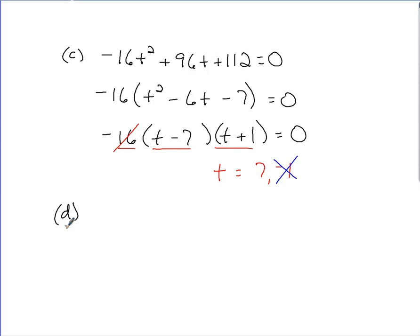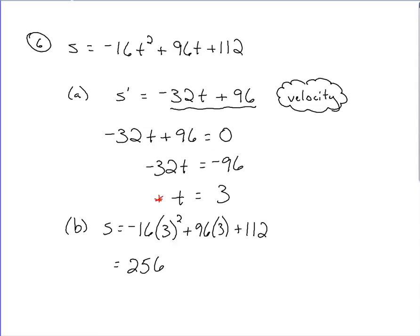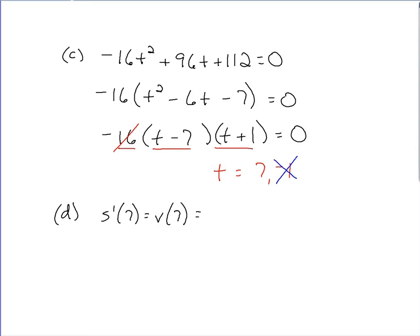If we're talking about velocity, we're going to plug into the derivative. So finding at this point, it would be s prime of 7. Or, since it's velocity, you could say v of 7. What was our derivative back here? Our derivative back here was negative 32t plus 96. So it would be negative 32 times 7 plus 96.